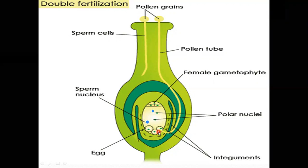This pollen tube enters the ovule through a micropyle, and inside the ovule the embryo sac is present — also called the female gametophyte, made up of seven cells and eight nuclei.